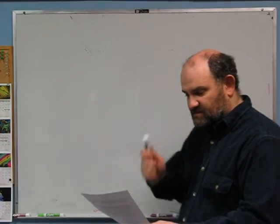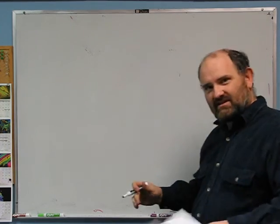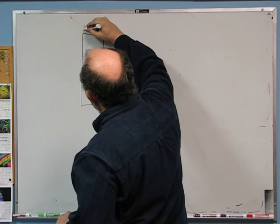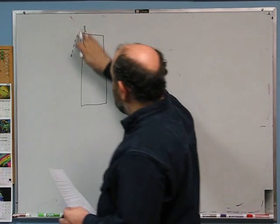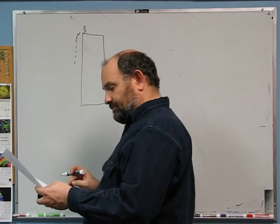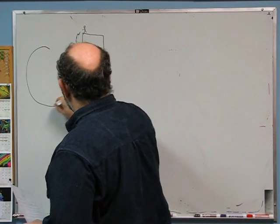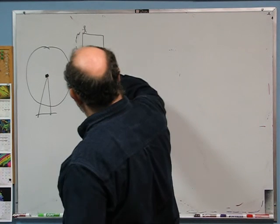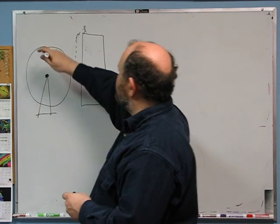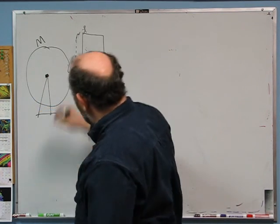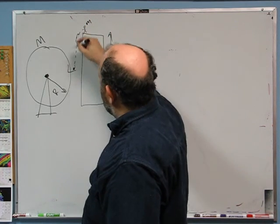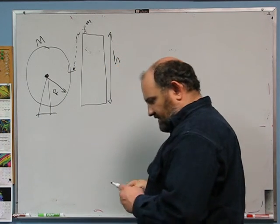Problem 3: James Bond, a fictional British spy of mass m, is going to jump off a building. He's going to jump and fall straight down, then land on a Ferris wheel fixed in place. The Ferris wheel has mass M and radius R. The building is height H. James Bond is mass m. When he hits the wheel — which starts at rest — it's going to cause the wheel to start rotating.